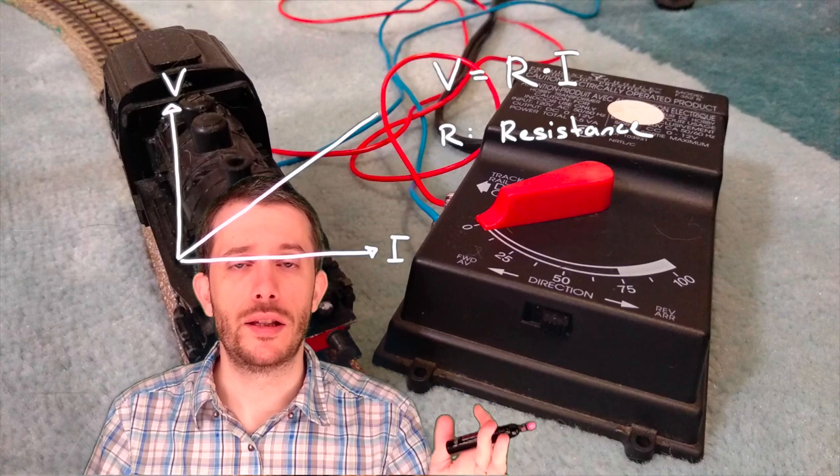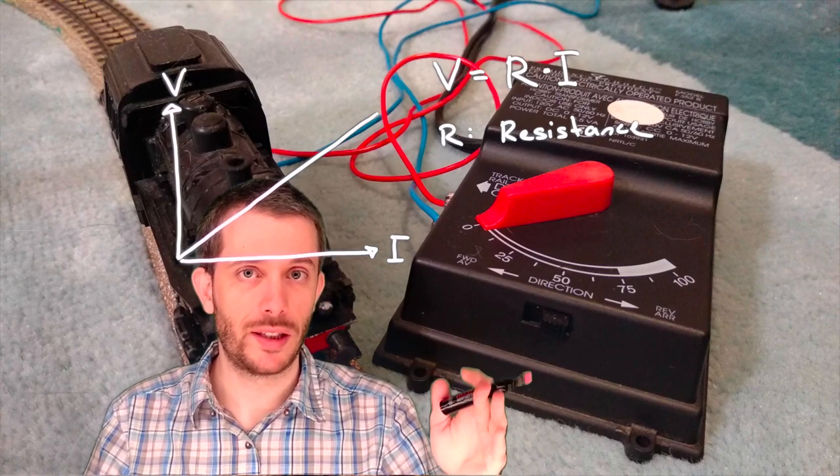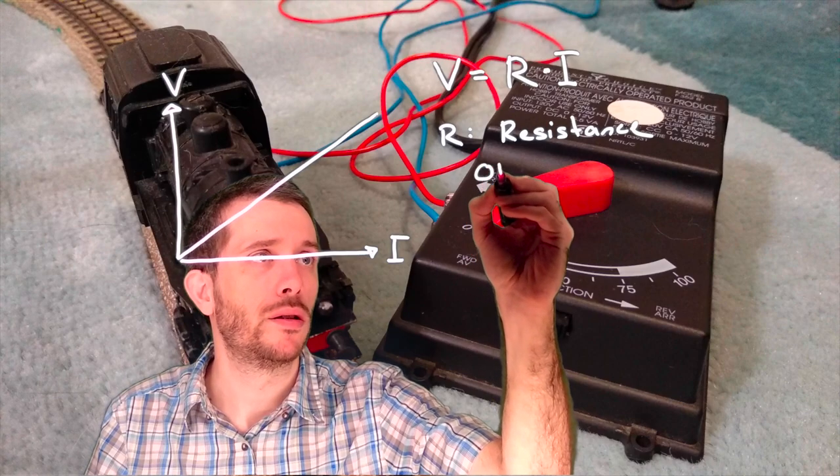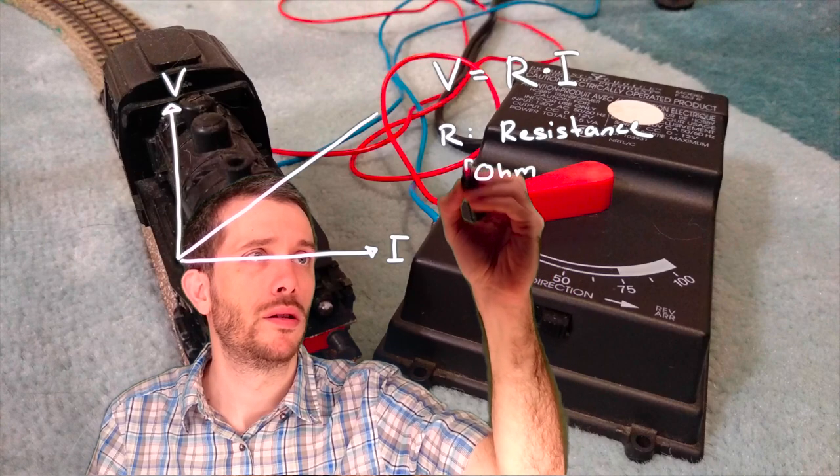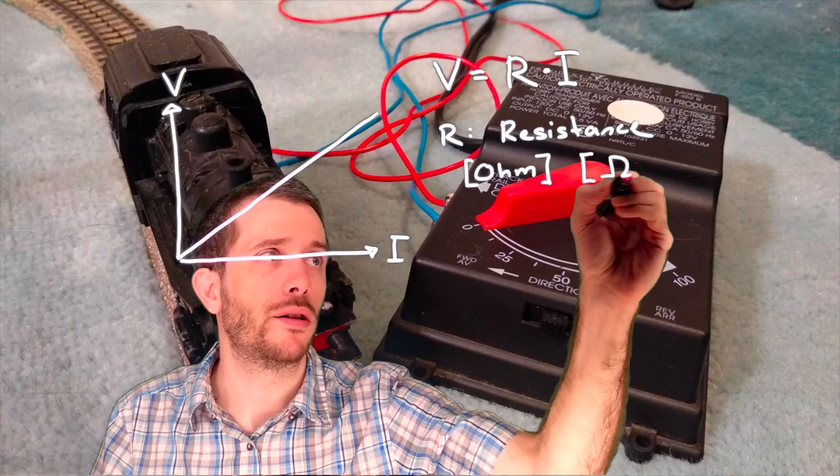Resistance is a property of an electric device and it's usually measured in ohms, for which often we use the Greek letter omega.